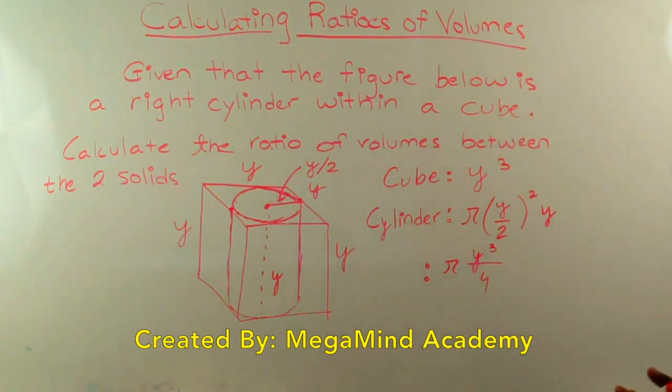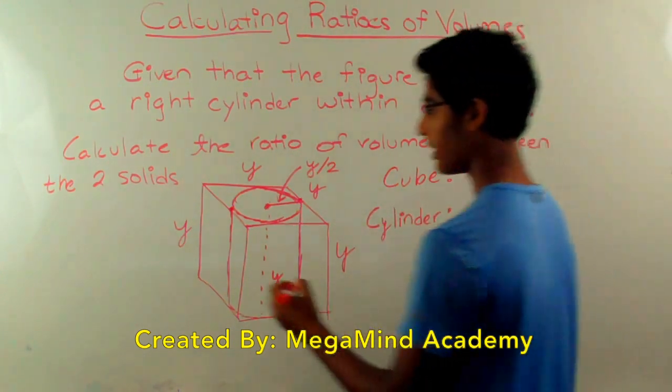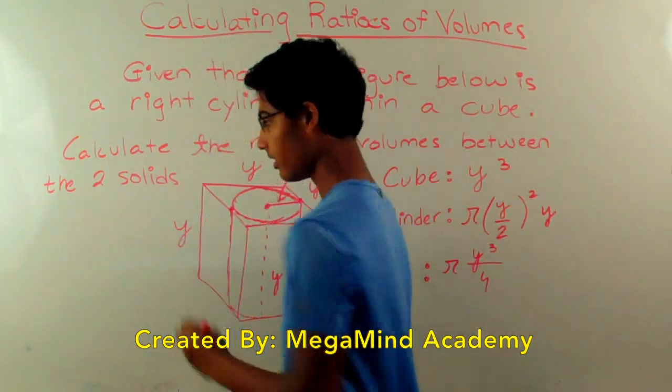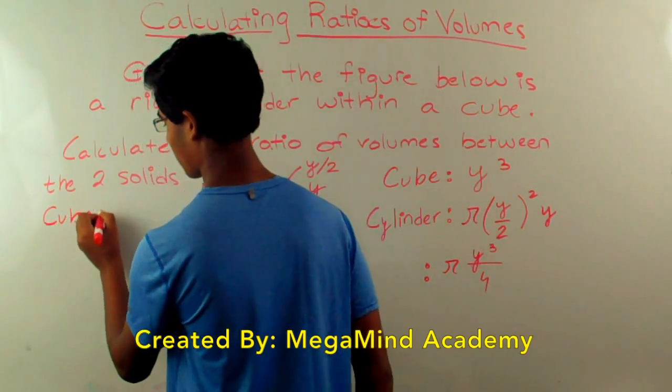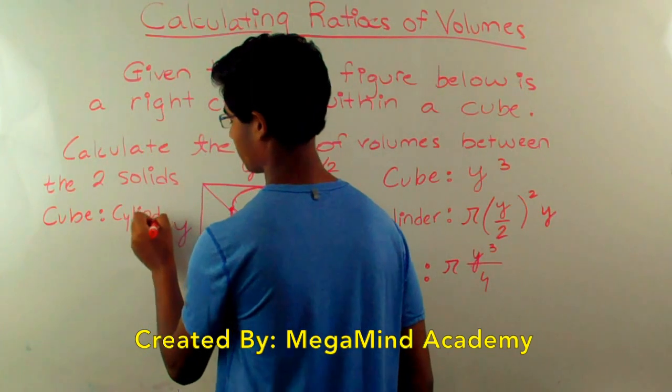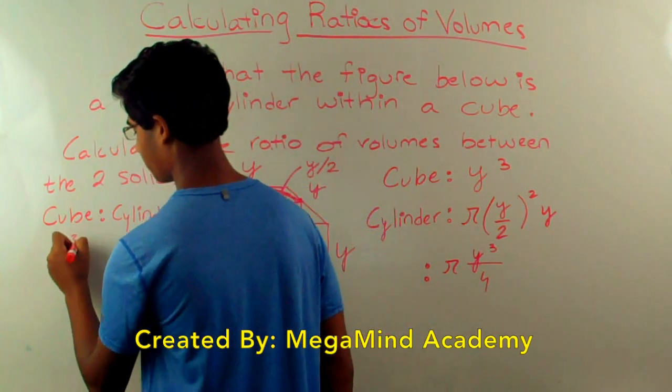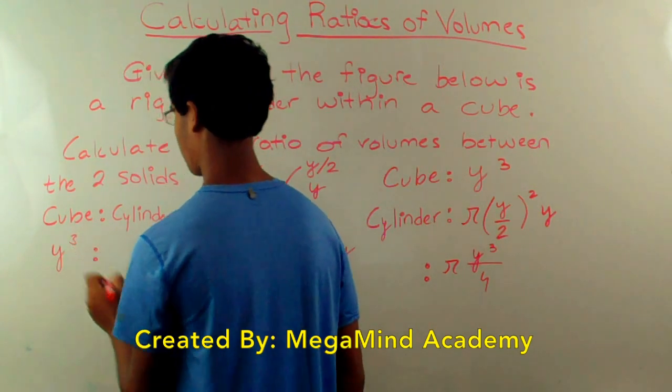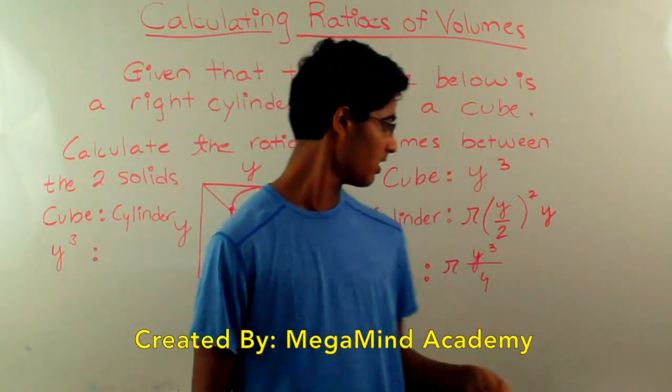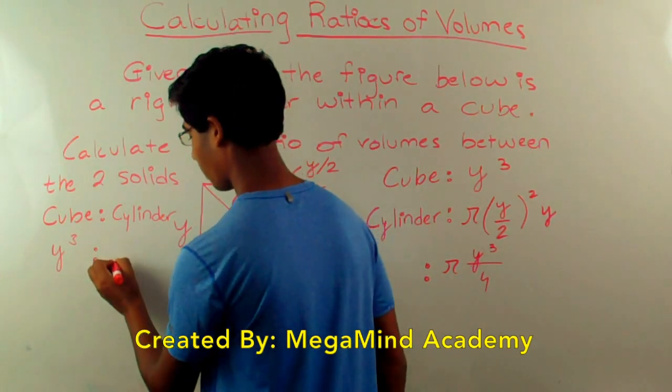So now we have to find the ratios between these two volumes, and let's move over there for it. So we have the ratio of the cube to the cylinder: the volume of the cube is y cubed to the volume of the cylinder, which is pi times y cubed over 4.